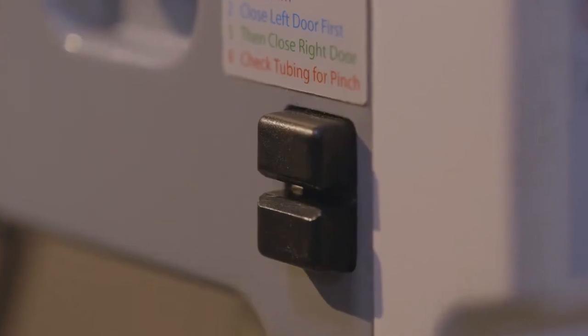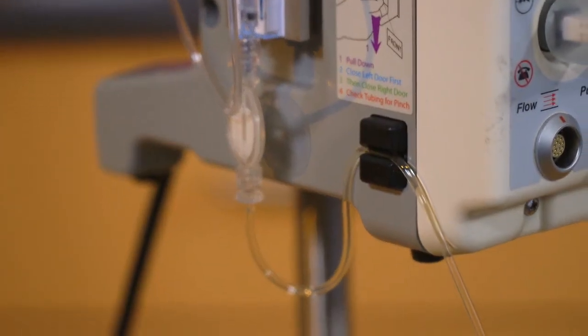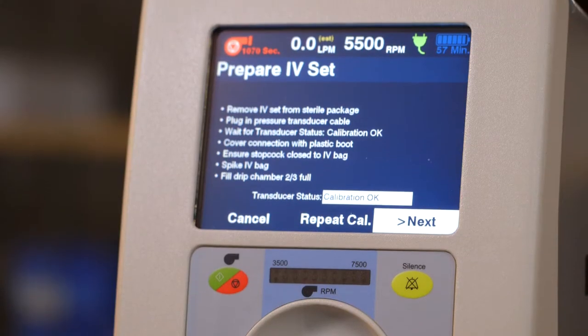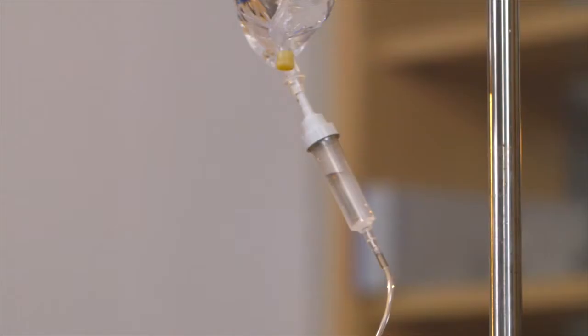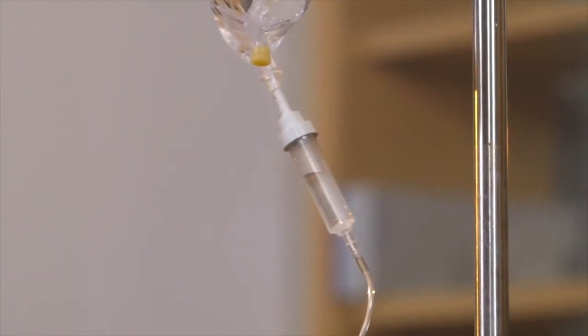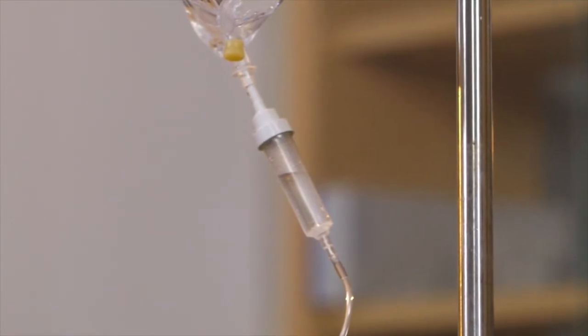The controller operator then inserts the infusion line into the air bubble detector by simultaneously pushing and pulling the pump infusion line. With the controller powered on and stop cock open, the controller operator checks for drips in the infusion assembly drip chamber.